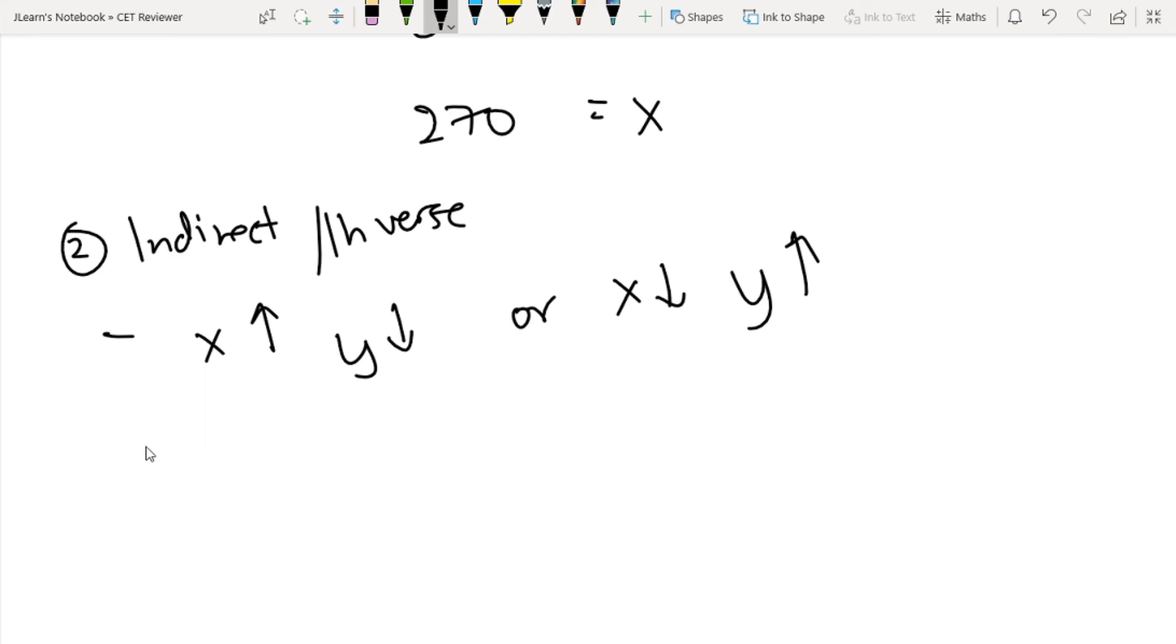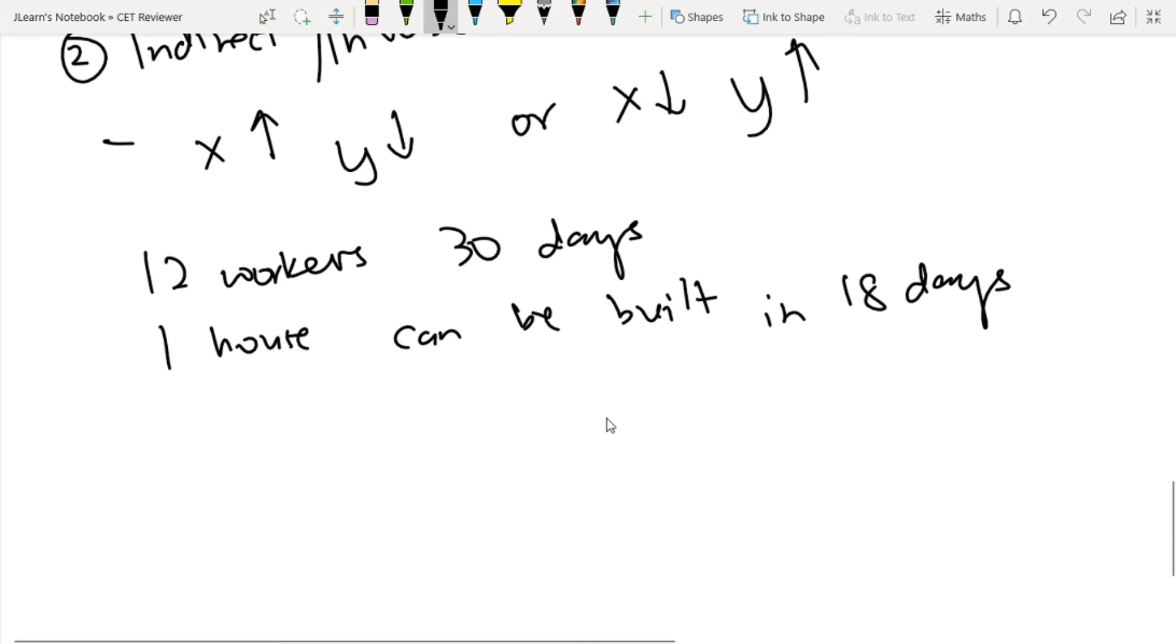For example, let's say we have 12 workers. They can build a house in 30 days. And let's say one house can be built in 18 days. How many workers should there be to build it in 18 days? If you think about it, the more workers you have, the faster the work is finished. The fewer workers, the slower the work is finished.